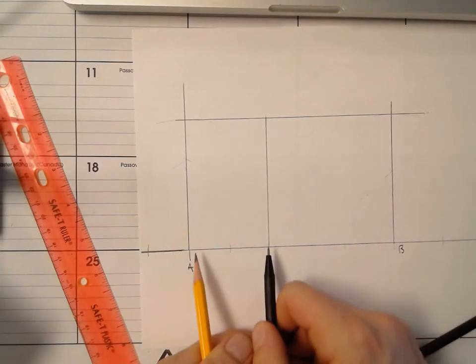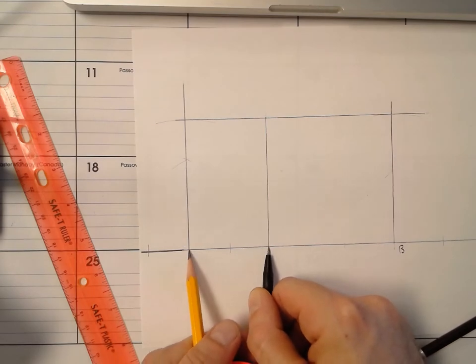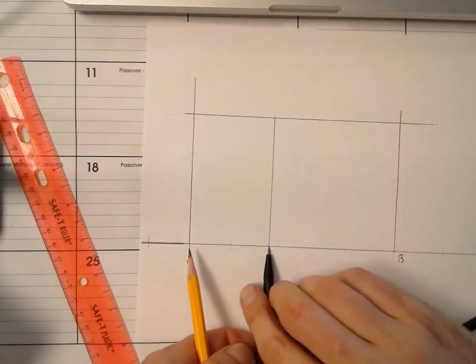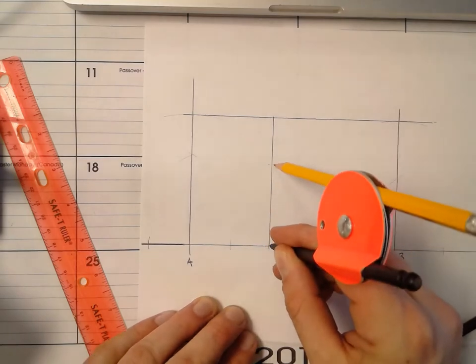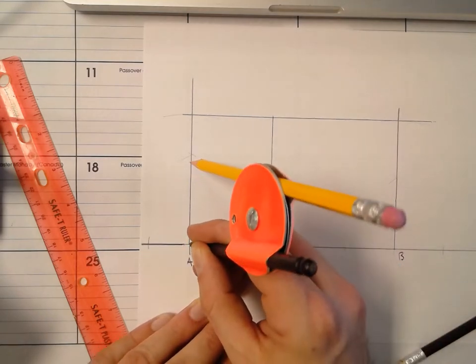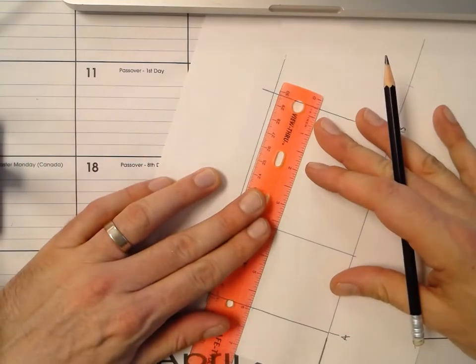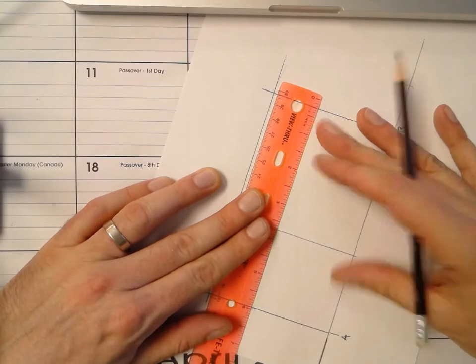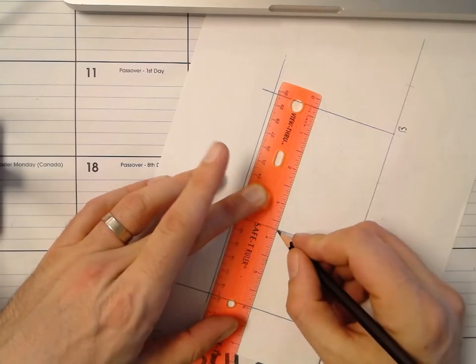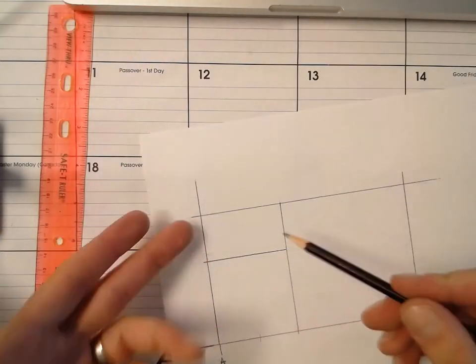Okay, what we're going to do now is open our compass to this length and we'll intersect there and there. And we'll connect these and that'll make another square and another golden rectangle.